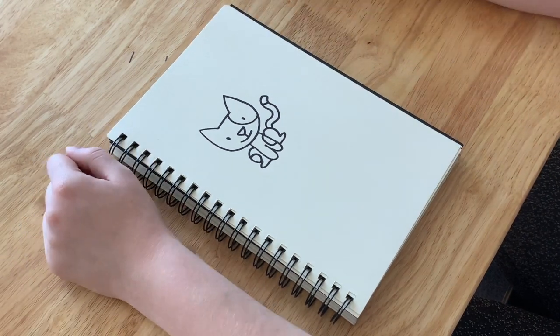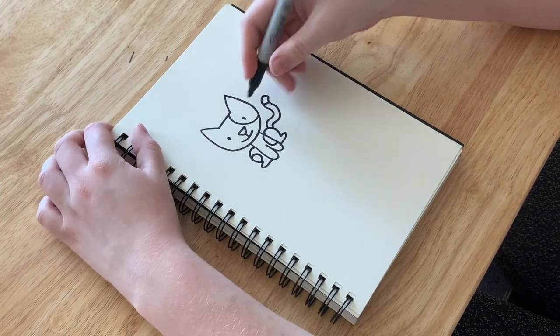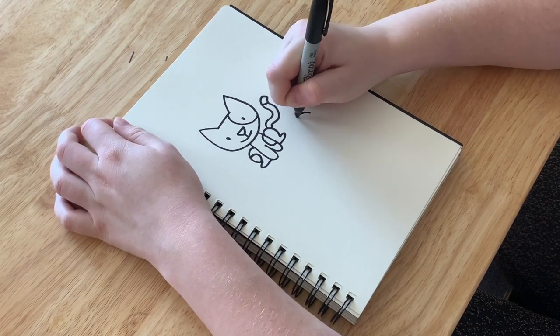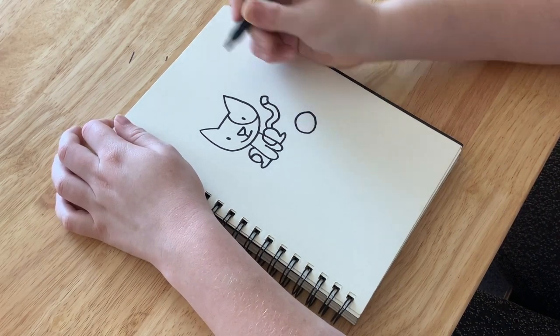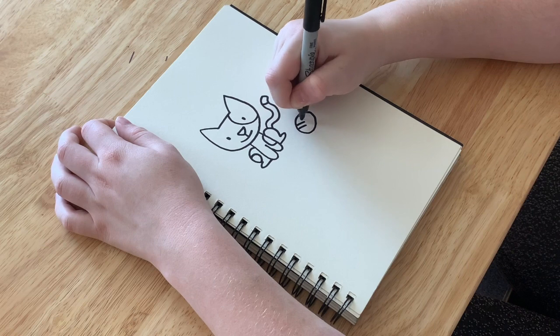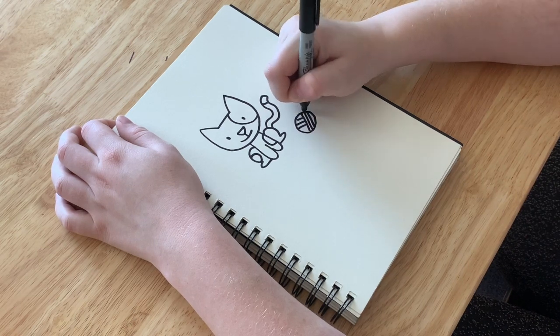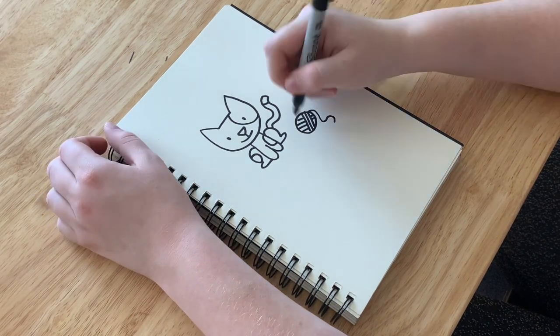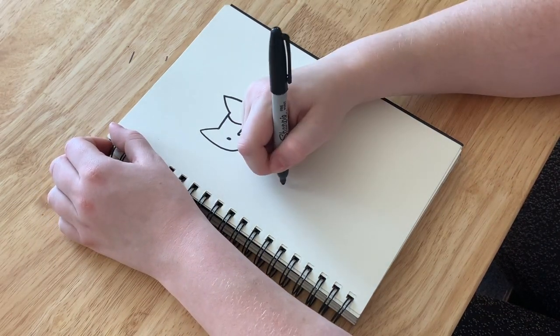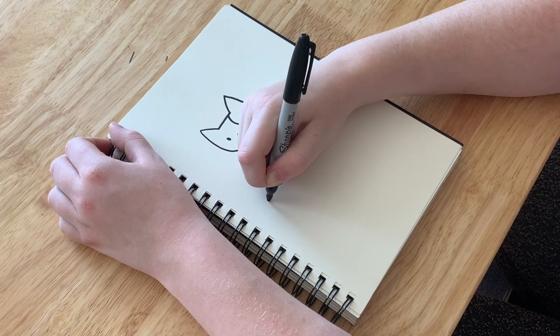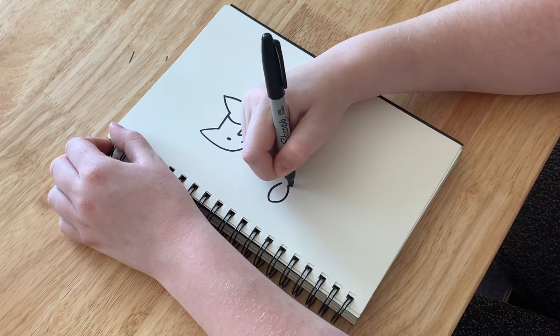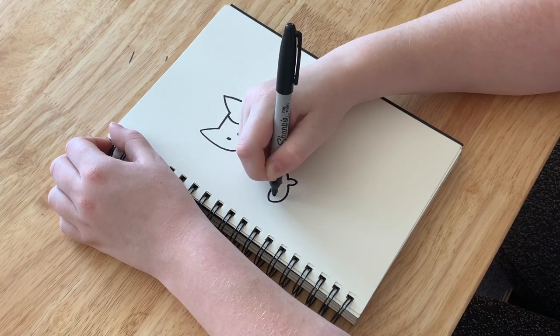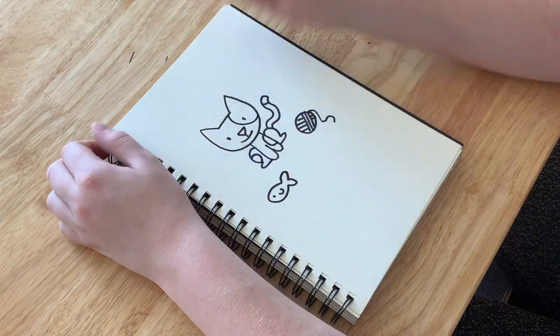And there's my kitten. You can add all sorts of different things. So I'll give her a little ball of yarn. I'll just do a circle and then some lines connecting and a little piece of string coming off. So the little ball of yarn. Can also give her a little stuffed fish toy like this. Little fish.